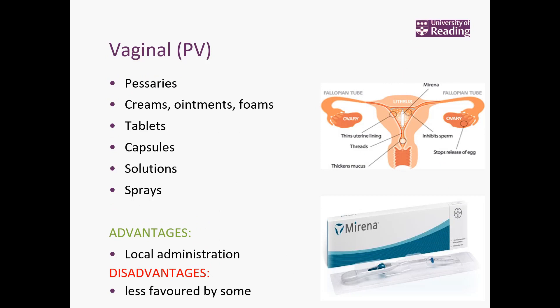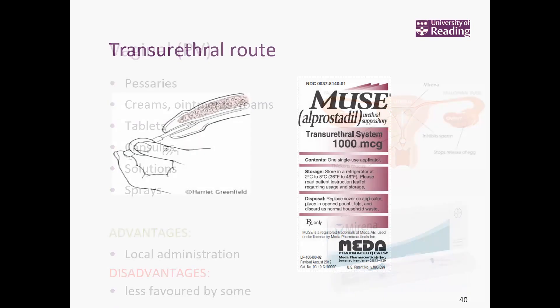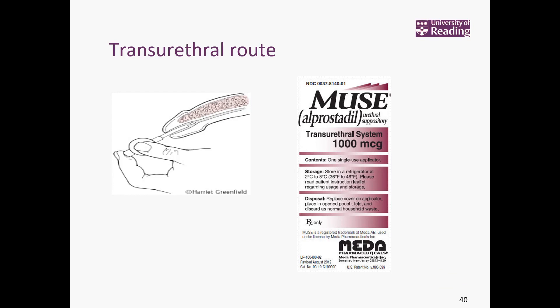Then we've got the vaginal route — obviously female only. Different formulations are available, including contraceptives like the IUD (intrauterine device). It's a local effect with good blood supply in the area. Men can also have different preparations inserted via the transurethral route, usually for erectile dysfunction — though you can imagine this can be an unpopular route as well because of the discomfort, so it's not something you'd see in practice very commonly.